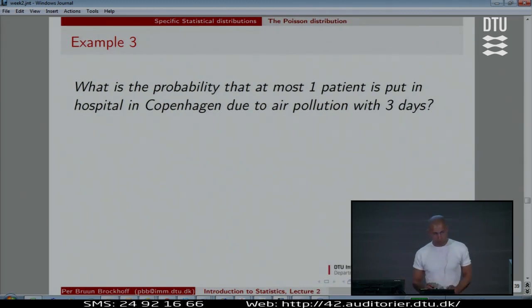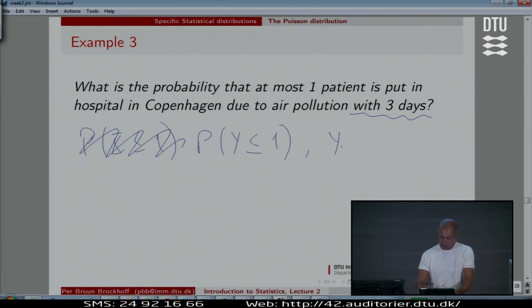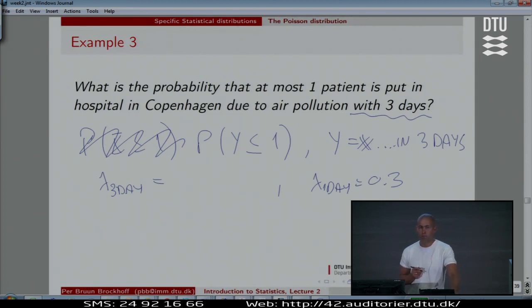We're going to do this one, just to make a point. What is the probability that at most one patient... Not more than one patient... Ah! Not one day. Three days now. Ah! Then let me just change, let me not call it x, but let me call it y. And you could say, y would then be the number of patients in three days. What do you think lambda three day, to emphasize this, is? When lambda one day was 0.3. What is lambda three day, you think? Common sense rules, so there are no trick questions in this one. It's common sense.